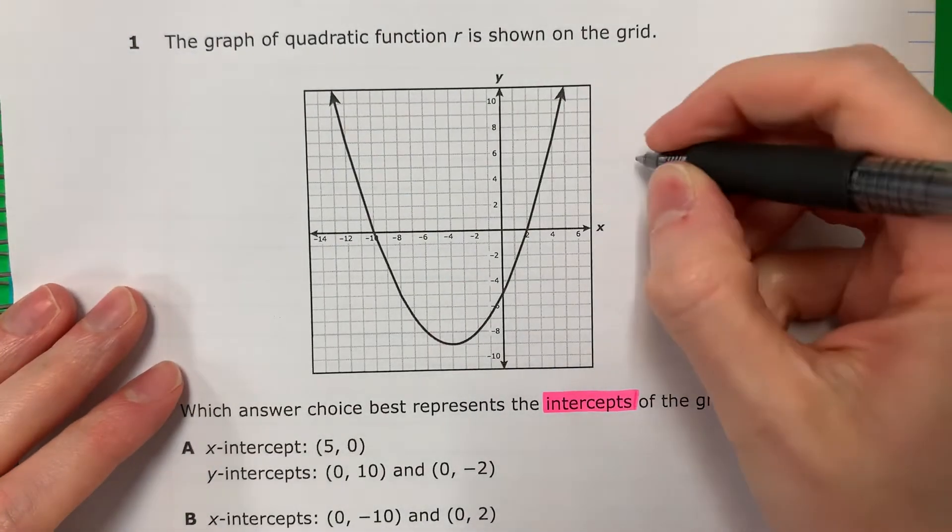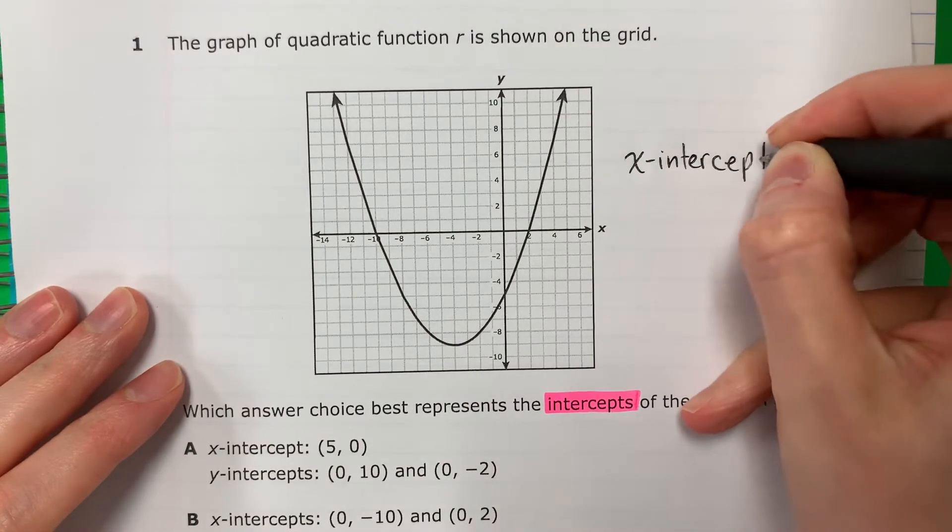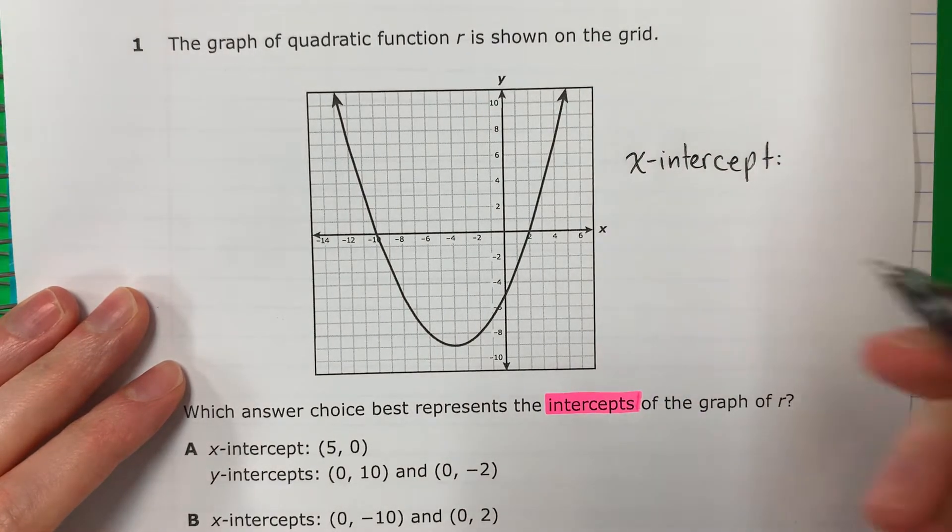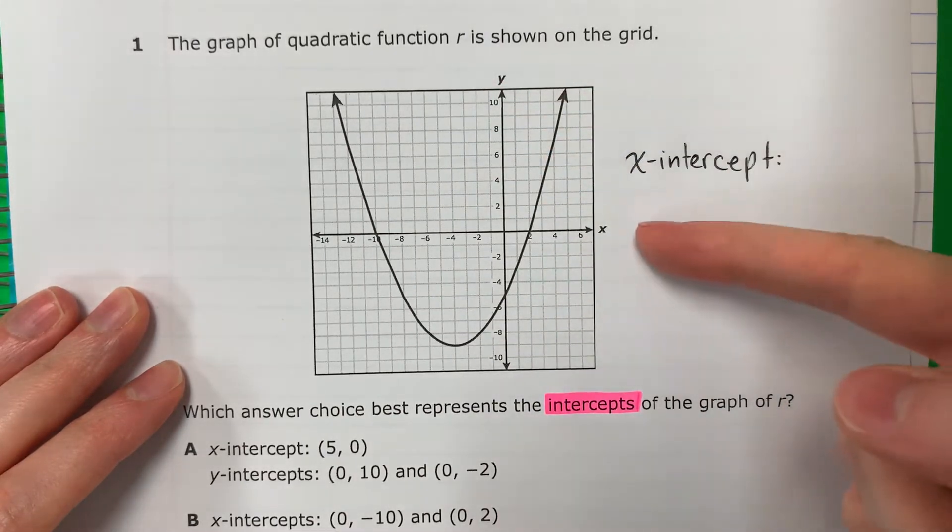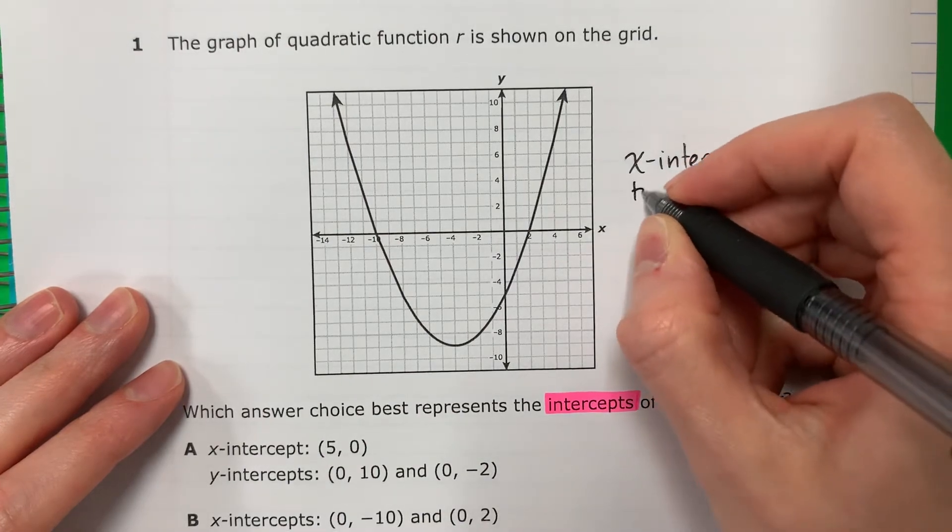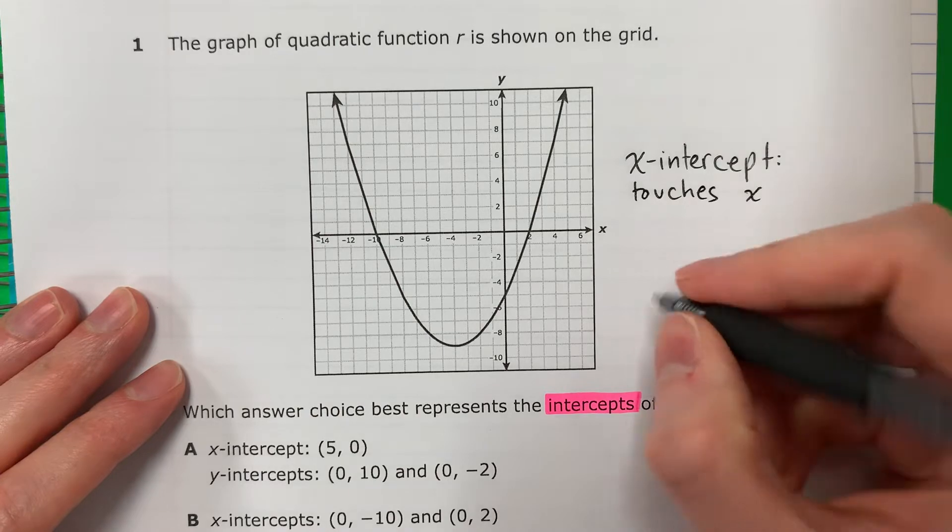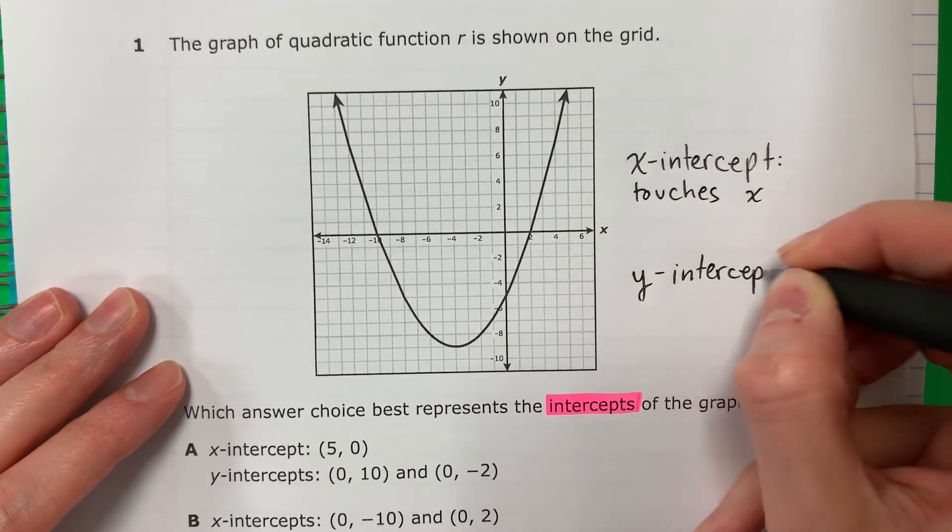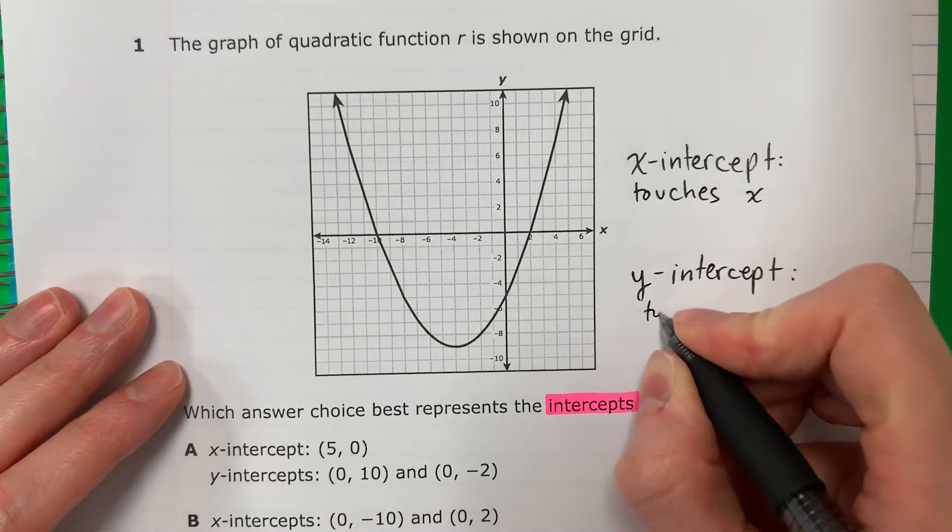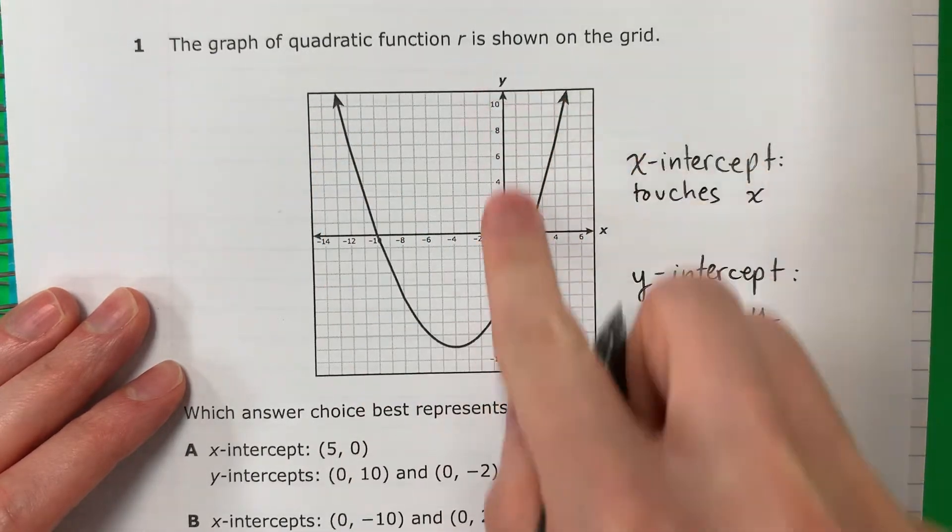There is x-intercept. And that is where the line or the parabola touches the x-axis. Touches x. Toca x. And then there's the y-intercept. And that is where it touches the y. Donde se toca el y.